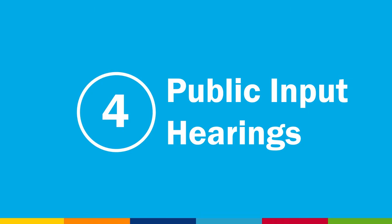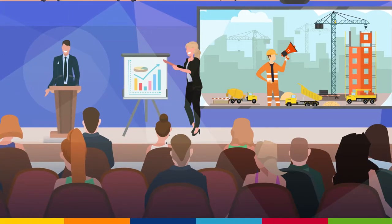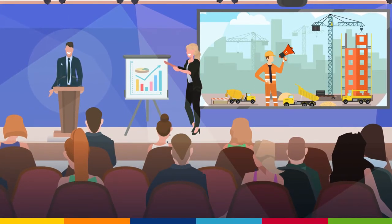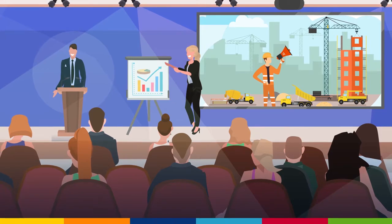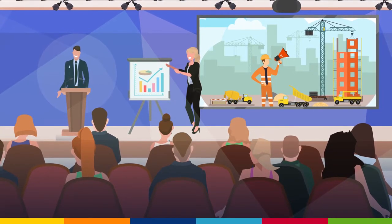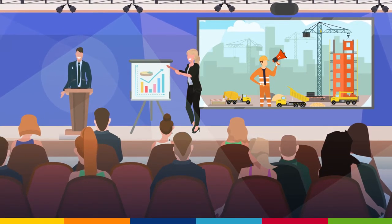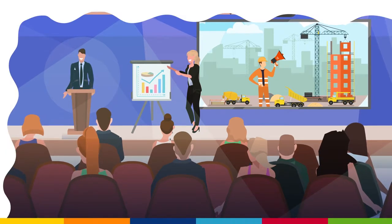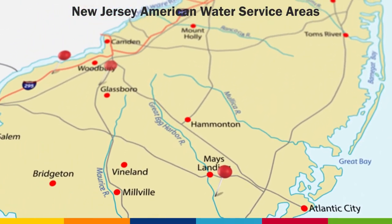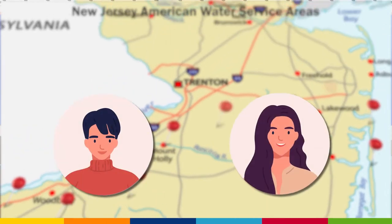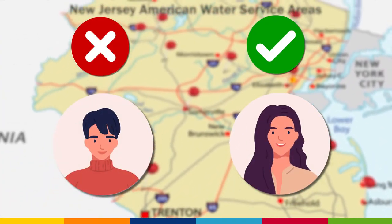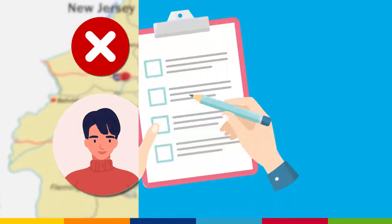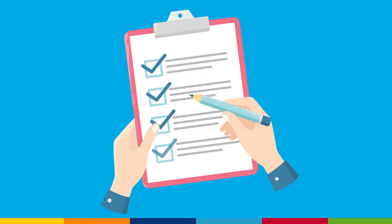Step 4 – Public Input Hearings. During the discovery process, the utility holds public input hearings. These hearings can overlap the discovery process depending on how fast discovery requests are sent out. These hearings take place throughout the company's service area to allow the utility's customers to challenge or support the rate filing. Written and oral comments become part of the record reviewed by the BPU in making a final decision.